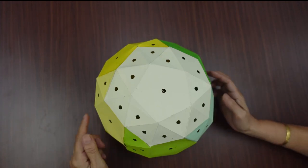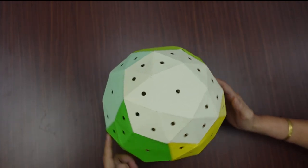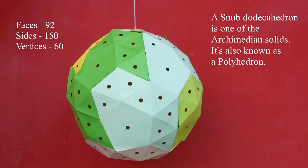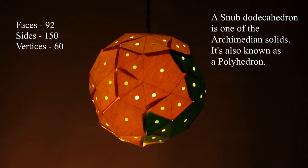Thus when all the flaps are joined to the side flaps, we see the snub dodecahedron form. This snub dodecahedron has 92 faces, 150 sides, and 60 vertices. It is a polyhedron.